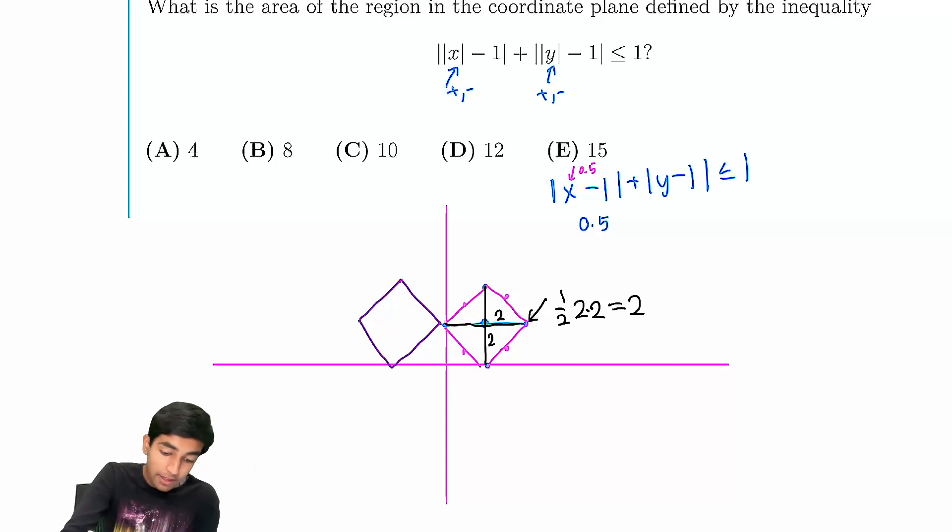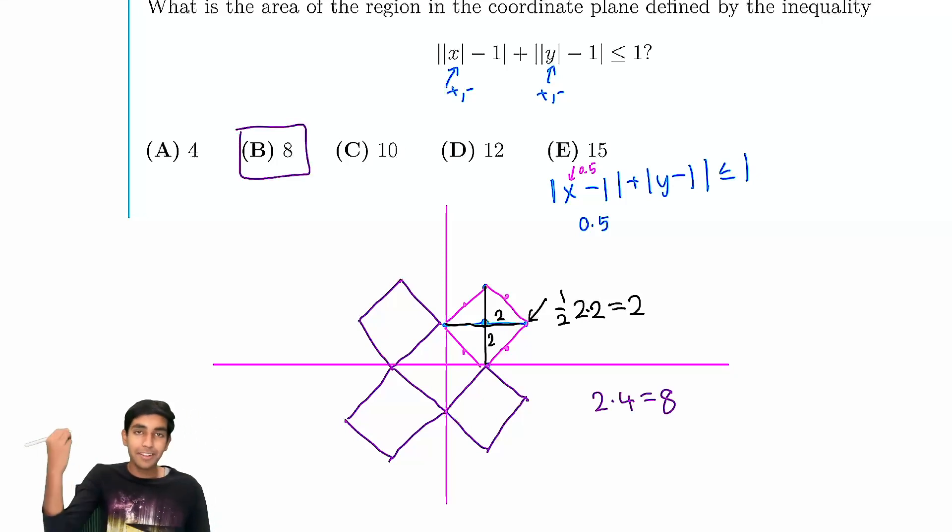So we can apply the exact same logic for y. We just reflect it over the x-axis. And similarly, if x and y are both negative, it's just going to be the same diamond region in the third quadrant. So overall, our area is just 2 times 4, which is 8. And that's our final answer. Boom.